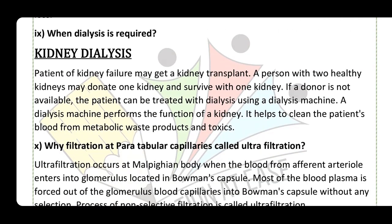Question nine: When is dialysis required? A patient with kidney failure may get a kidney transplant. A person with two healthy kidneys may donate one kidney and survive with the remaining one. But if no donor is available, the patient is treated with dialysis using a dialysis machine. The dialysis machine performs the function of the kidney - it helps clean the patient's blood from metabolic waste products and toxins.